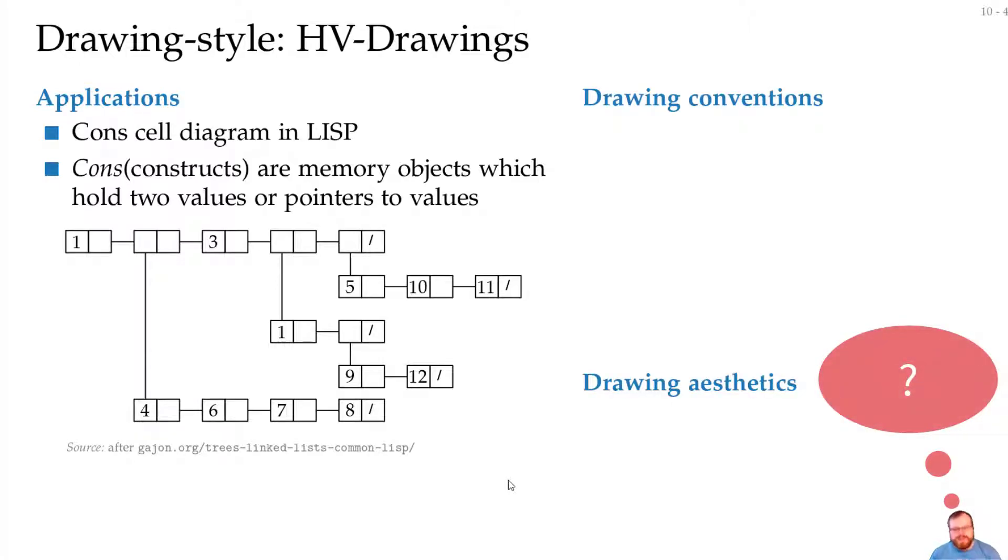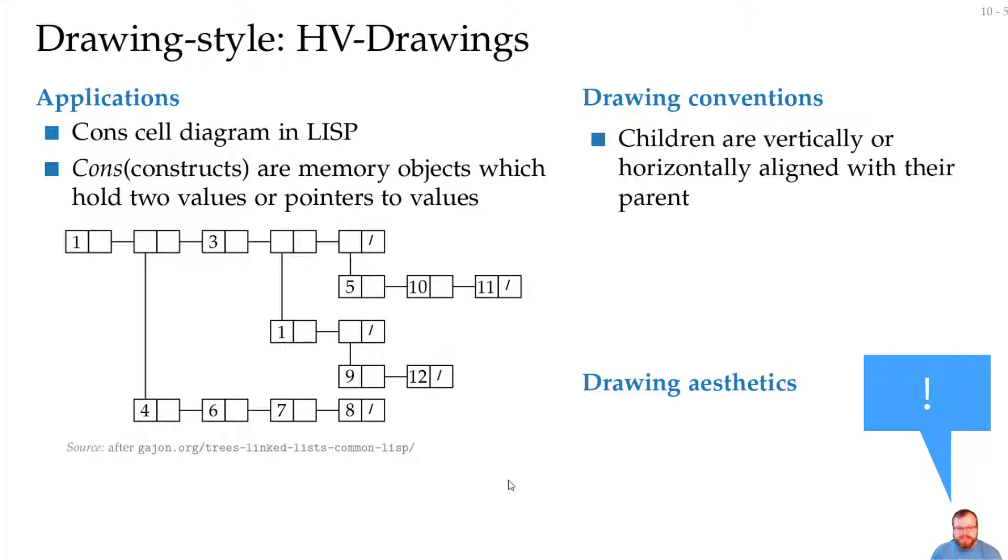So what are the drawing conventions and aesthetics? Try to list them for yourself first. I will list three drawing conventions. First, we want the children to be vertically and horizontally aligned with the parent. Then we want bounding boxes of subtrees of the children to be disjoint.